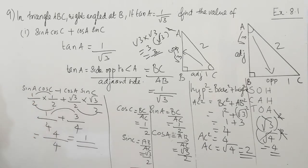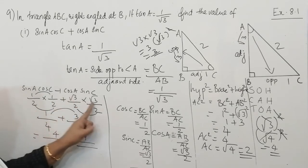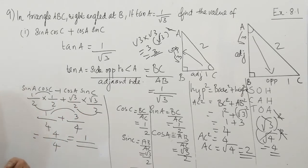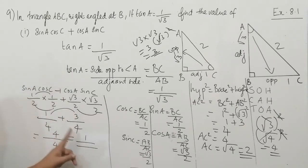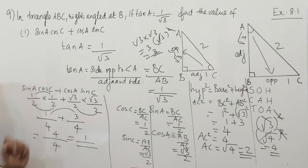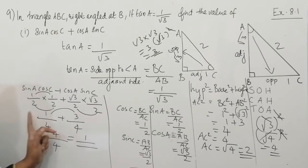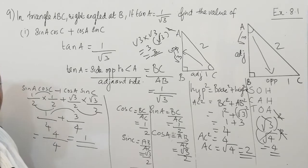Multiplying numerators and denominators: 1 times 1 is 1 and 2 times 2 is 4, giving 1 by 4. Root 3 times root 3 is 3 — or root 3 the whole square, where the square and square root cancel to give 3 — and 2 times 2 is 4, giving 3 by 4. The denominators are the same so we add directly: 1 plus 3 is 4, and 4 by 4 equals 1. Now we can solve the second part of this question.